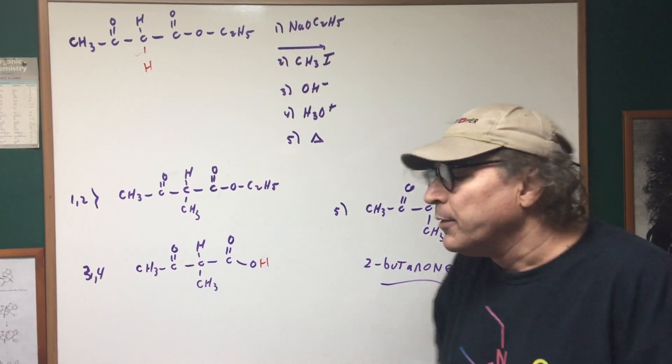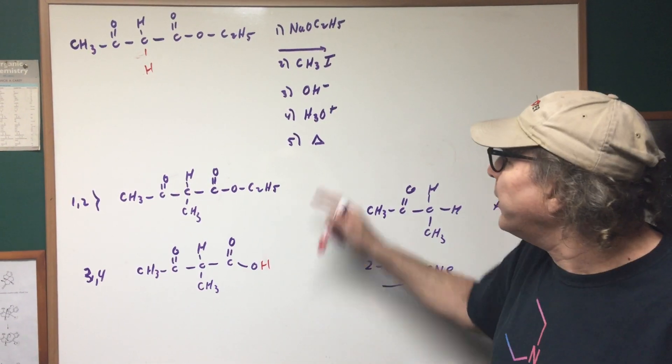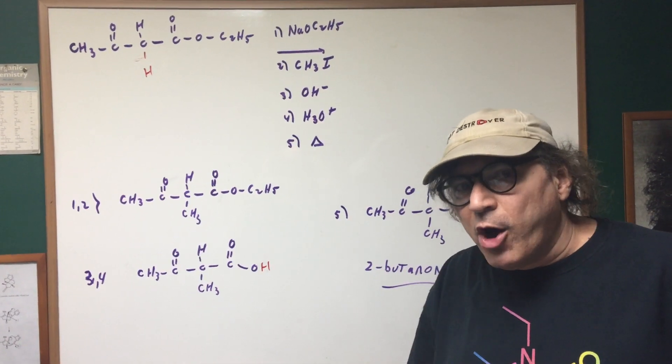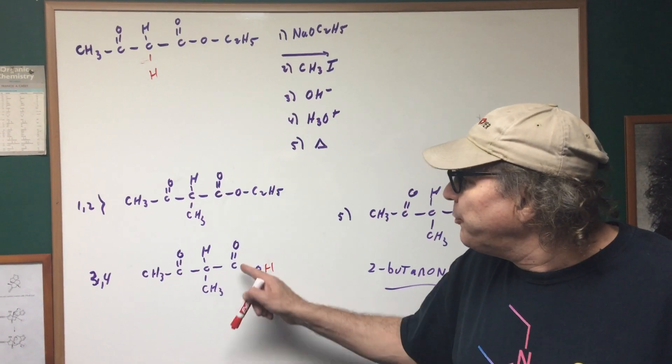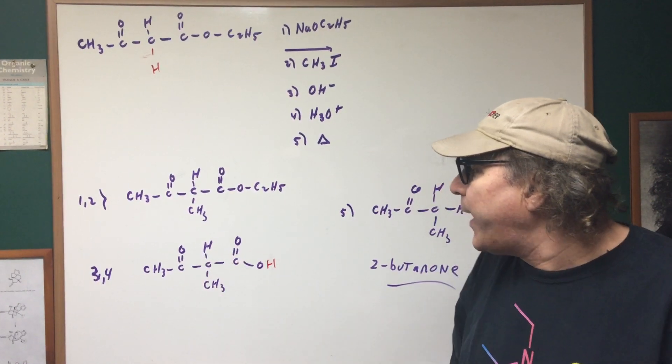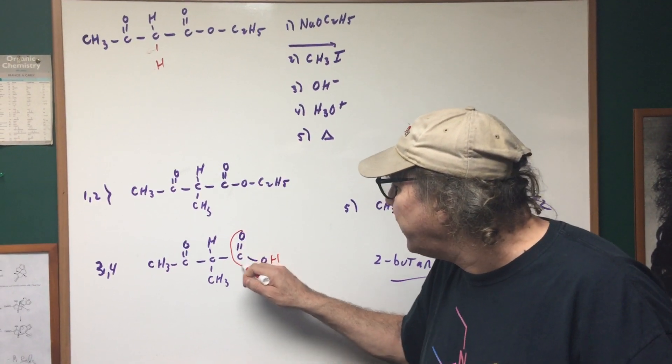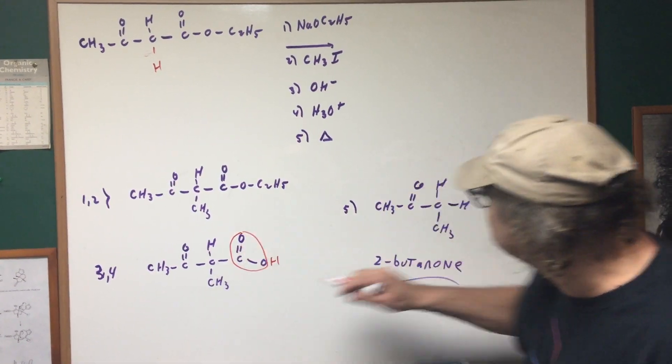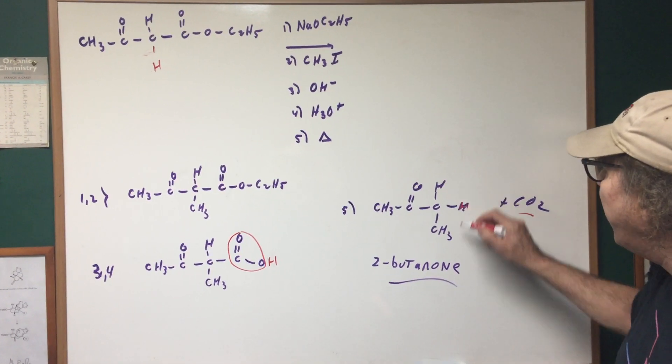Now comes the grand finale. You're heating it. What happens? Well, what kind of acid is this? I'm hoping you remember what we just did. This is a beta keto acid, and because it's a beta keto acid, you lose the CO2, and where you lost the CO2, you put your H, and there's your final product.